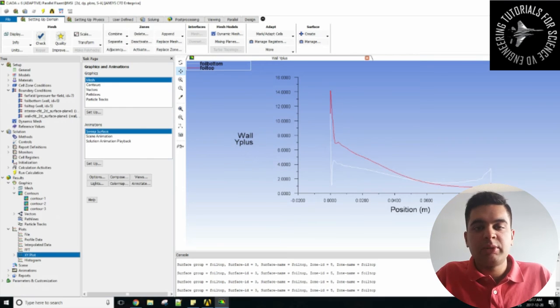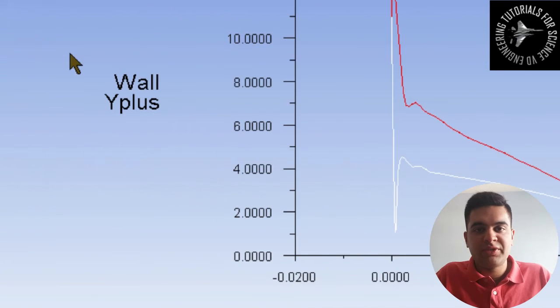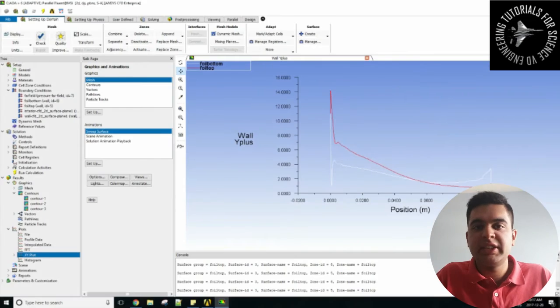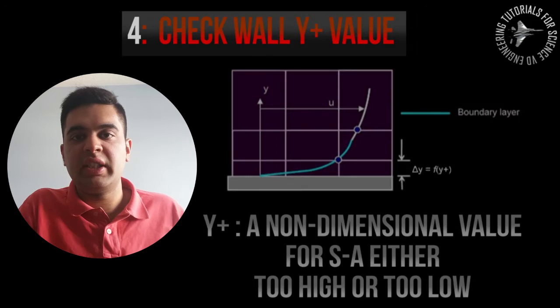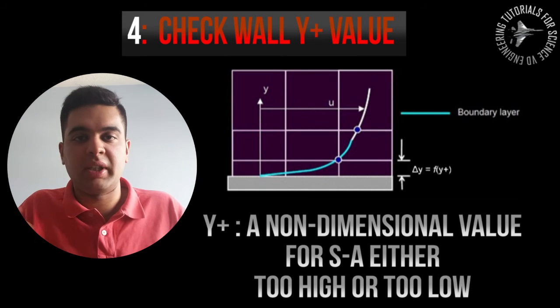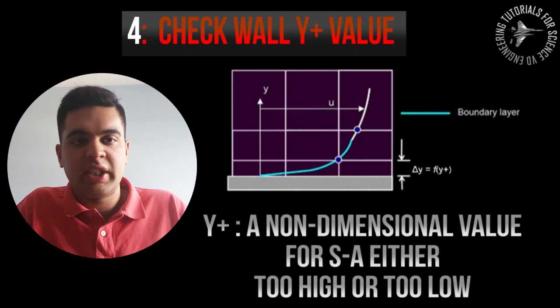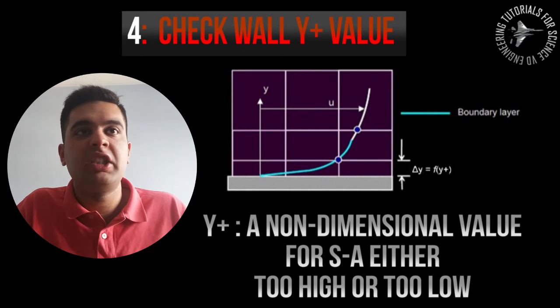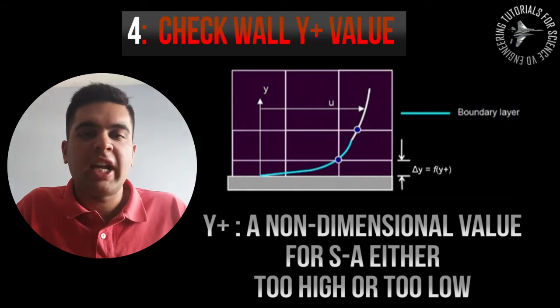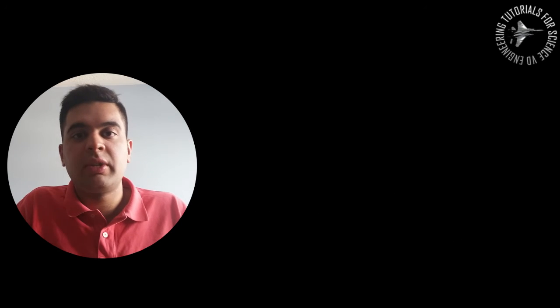So it is important to check this y-plus value. Now when it comes to Spalart-Allmaras the y-plus value is recommended to be below 20. It can either be that or it needs to be very high so above 50 or something. The value will depend on your mesh. So if you see that a value is not very good, for example if you have values like 20 to 30, this means that it's not very accurate.